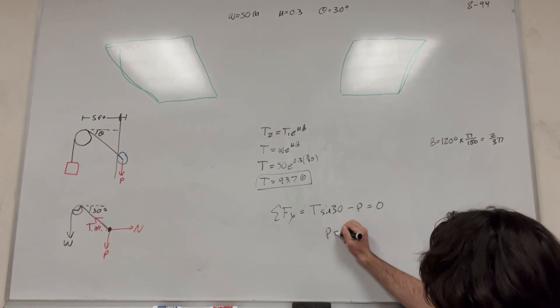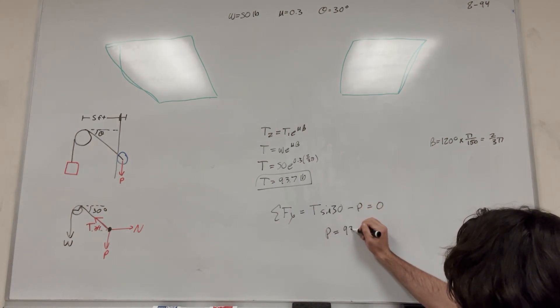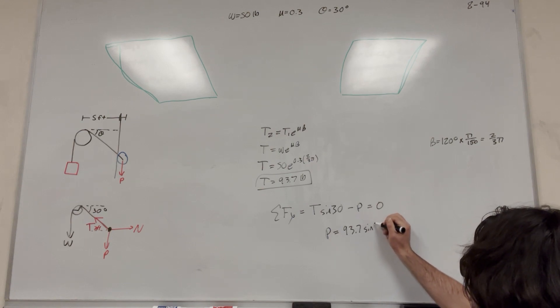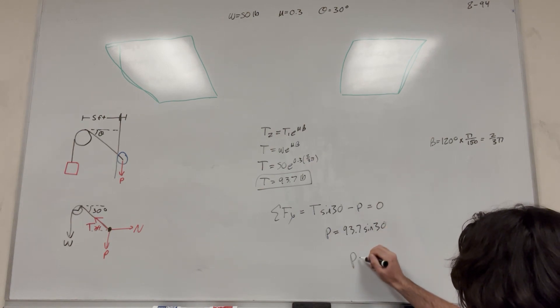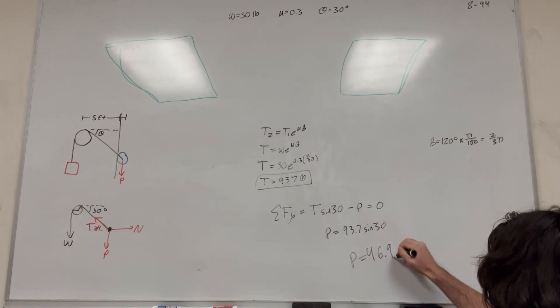So then, of course, you just add P over. P is equal to tension, 93.7 sine of 30, and you're going to get that P is equal to 46.9 pounds.